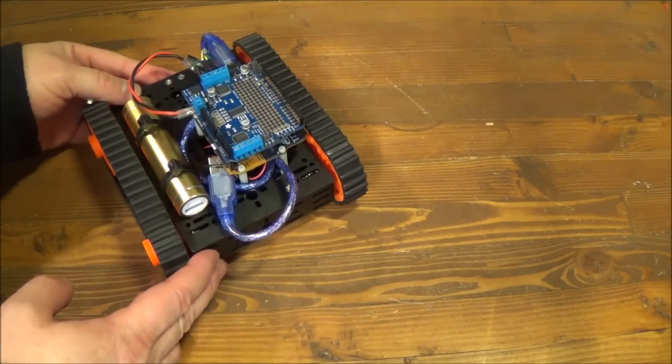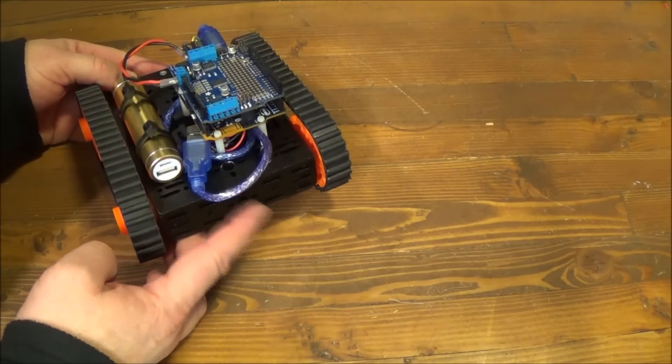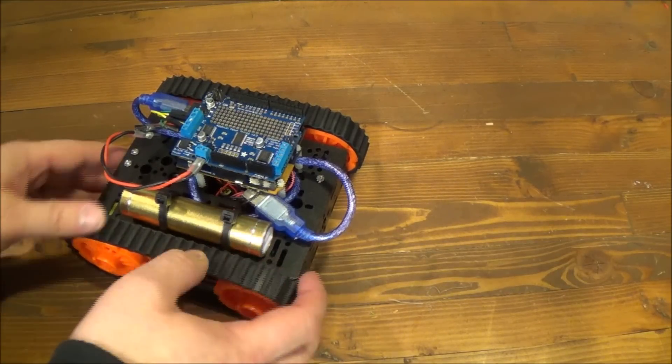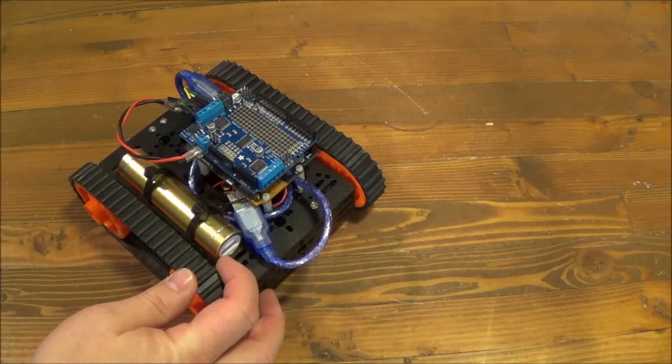So what I've chosen to do is I have a separate power source for the motors and then the Arduino is powered off of this 5 volt USB battery pack.